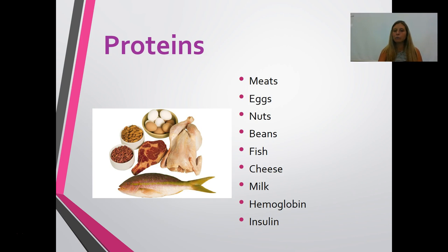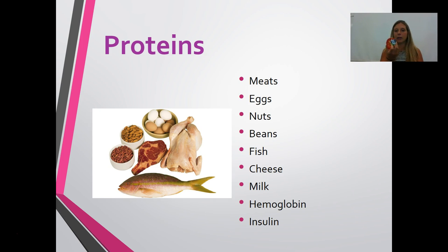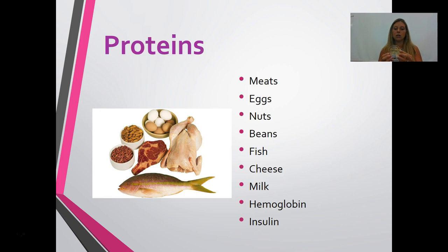Foods full of proteins include meats, eggs, nuts, beans, fish, cheese, and milk. Hemoglobin in your blood and insulin are examples of proteins. In my lunch, peanut butter has some protein, but I also had hummus, which is a really good source of protein.